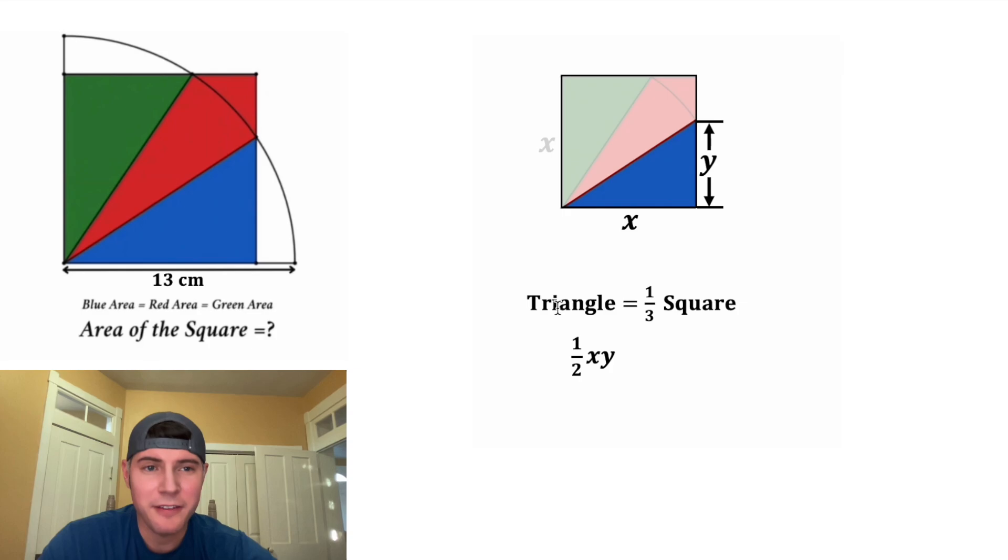Area of this triangle is one-half base times height, where x is the base and y is the height. For the right-hand side, one-third of the square is going to be one-third of x squared. Next, we can multiply both sides by 2. On the left-hand side, the 2 times one-half cancel, so we just have xy. And on the right-hand side, the 2 gets multiplied by the one-third to give us two-thirds, and then we can bring down the x squared.